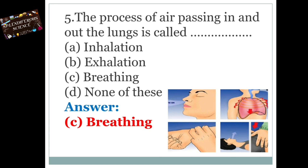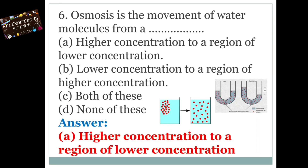Option A: Inhalation. Option B: Exhalation. Option C: Breathing. Option D: None of these. The answer is Option C, Breathing. The process of air passing in and out of the lungs is called breathing. Sixth one: osmosis is the movement of water molecules from a — Option A: higher concentration to a region of lower concentration. Option B: lower concentration to a region of higher concentration. Option C: both of these. Option D: none of these.